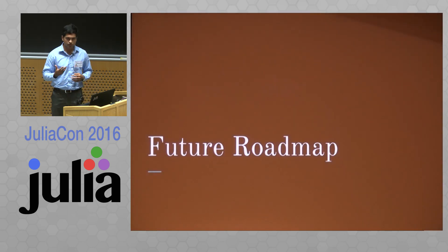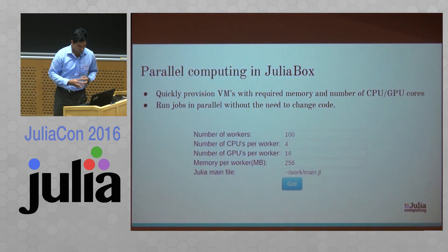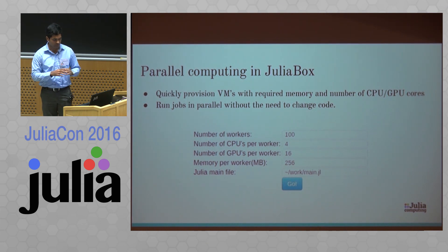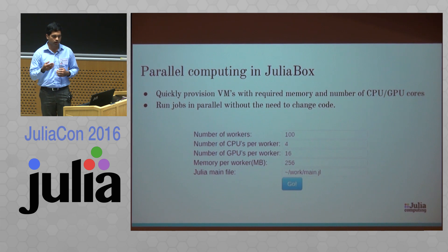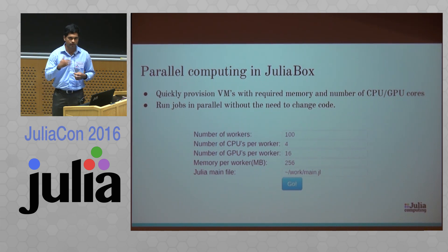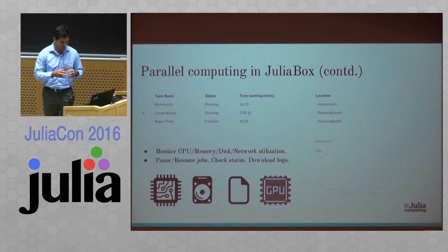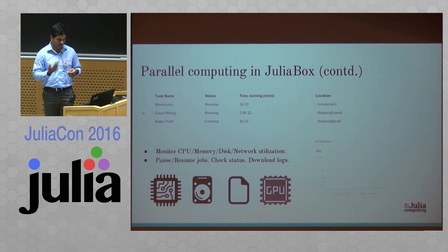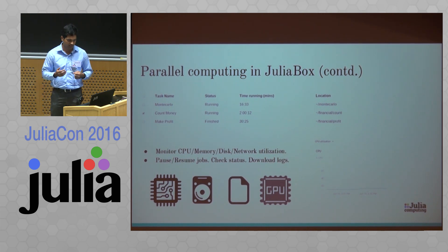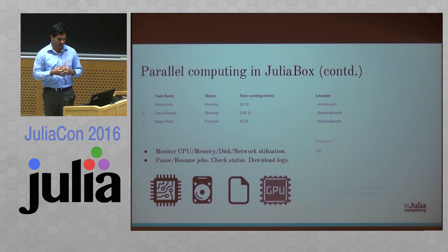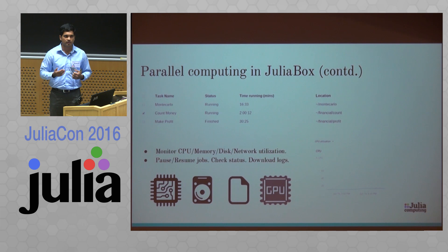I'm going to now talk about the future roadmap of JuliaBox. This shows a rough sketch of what the UI is going to look like. We're going to let users run tasks in parallel, and you get to provision instances with the required number of CPUs, GPUs, and the amount of memory you want. It's also going to let you monitor your CPU usage, memory, disk, and network utilization. And you get to pause and resume jobs, and also download logs or check the status of your job.